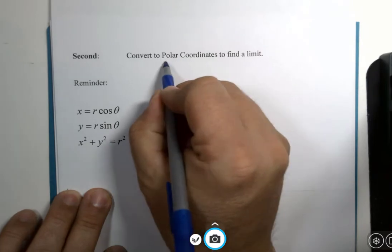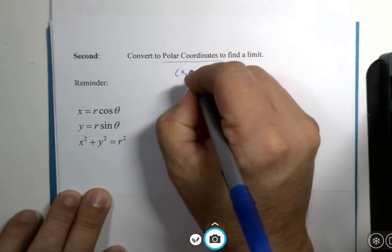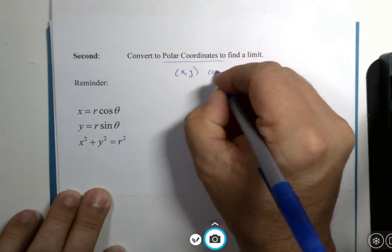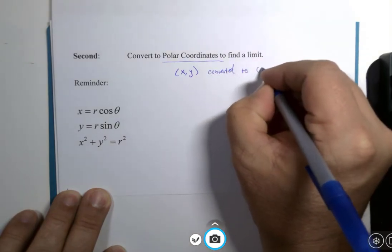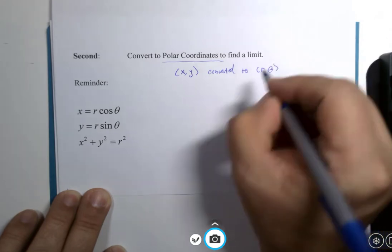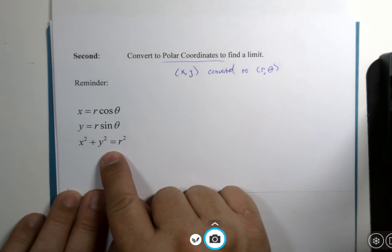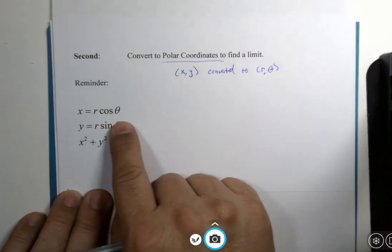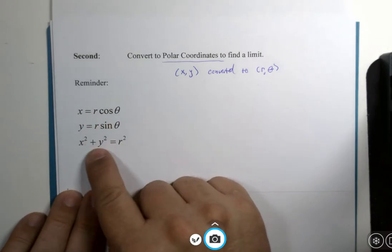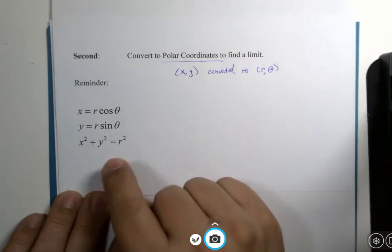But as a reminder, with polar coordinates, anything with x and y gets converted to r values and theta values. And the primary conversion formulas that we would use: x is equal to r multiplied by the cosine of the angle theta, y is r times sine of theta, and x squared plus y squared is r squared.